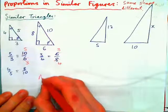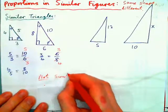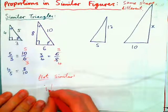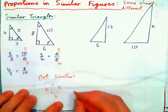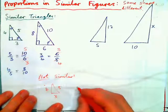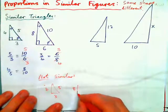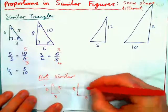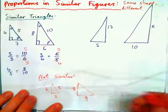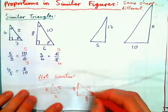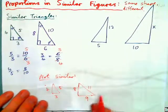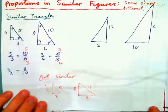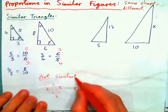What does not similar mean? Not similar means different shapes. You could have a triangle that was 4, 3, 5, and then one that was 8, 9, and 11 — these are just not the same shape at all. You cannot form proportions if they're not the same shape. Not similar just means not the same shape.